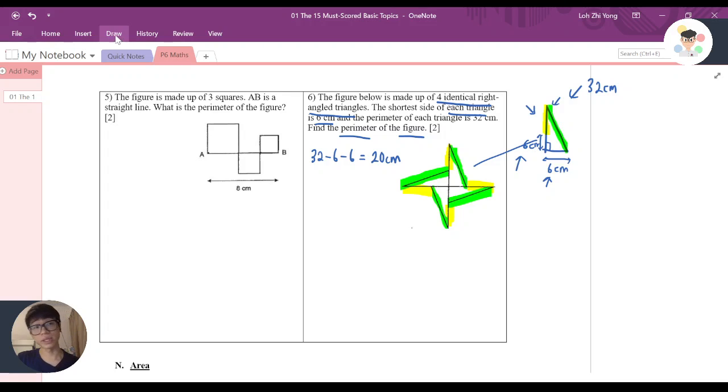Basically, yellow and green repeated for how many times? Four times. So what we need to do is 20 times 4, and the answer is 80cm. That is the perimeter of the figure.